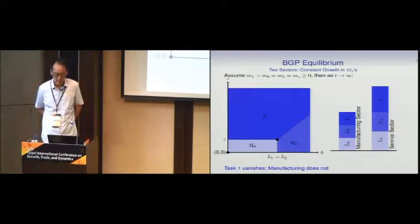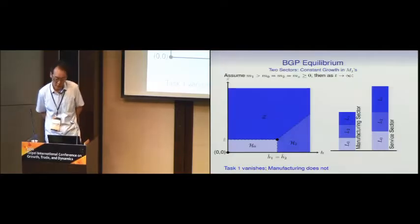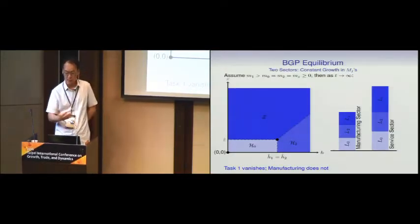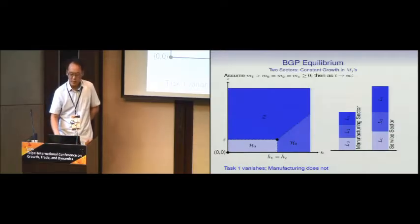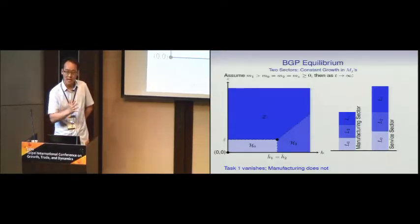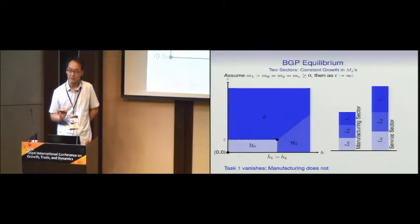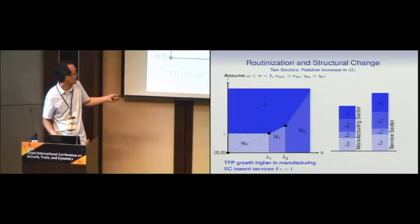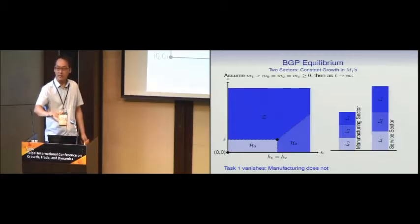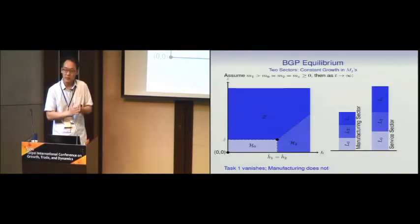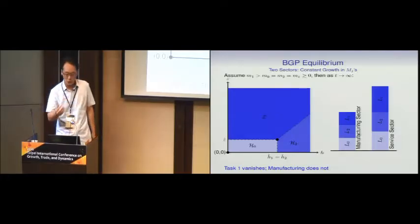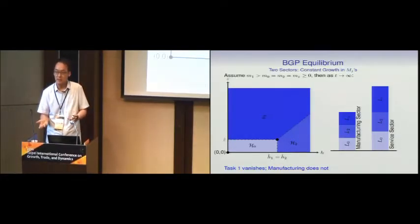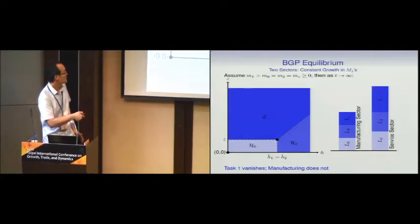One thing we like about this model compared to other structural change models that rely on exogenous sector-level TFP growth: in those models, the fastest TFP-growing sector eventually vanishes in the limit. In our model, what vanishes is not the sector but the occupation. If the middle-level worker task TFP keeps increasing asymptotically, that occupation's employment share disappears. Once the occupation disappears, there's no difference between manufacturing and services, and hence the two sectors stabilize.